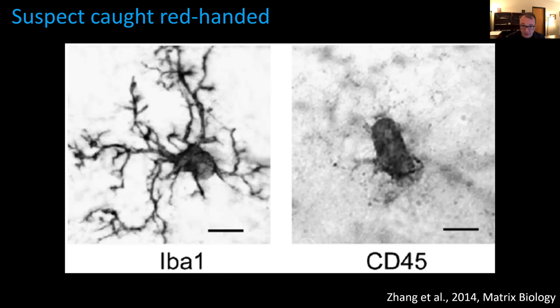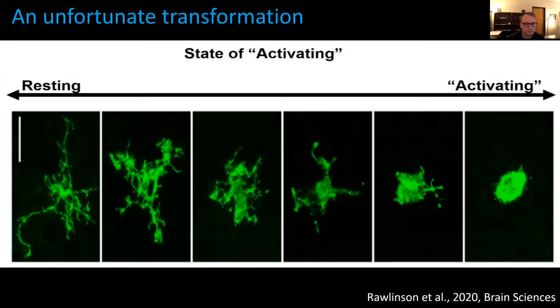We know what microglia look like when they are abnormally activated. Microglia on the left are normal; those on the right have been activated in an inflammatory way. We can even see them change from resting to activated. However, these are usually rodent cells that must be isolated — you cannot image this in a living human through the skull. There's no technology that allows that. So we know what we're looking for, but the question is how to actually image it in a living human.